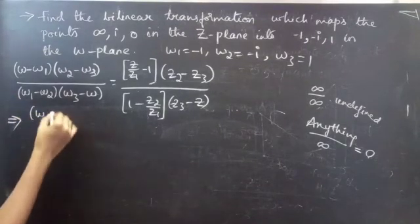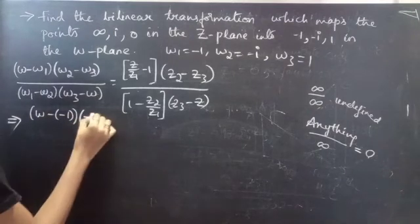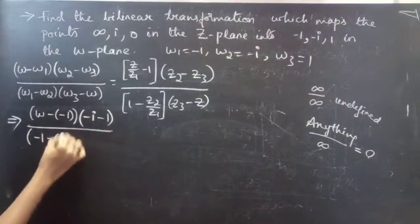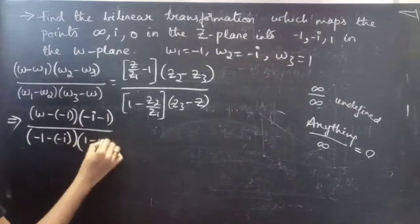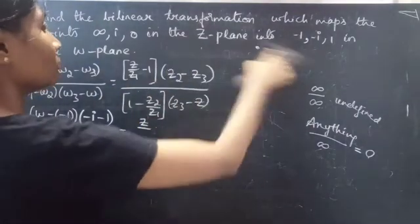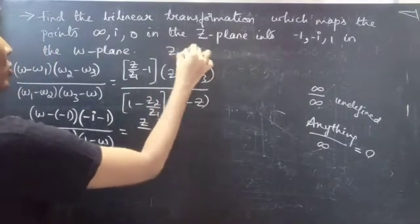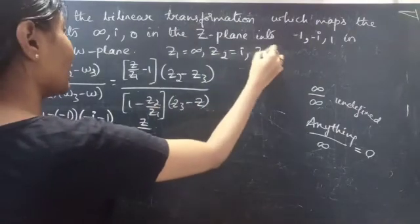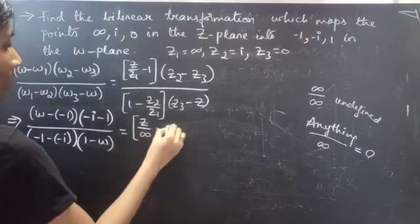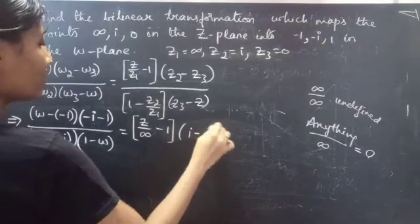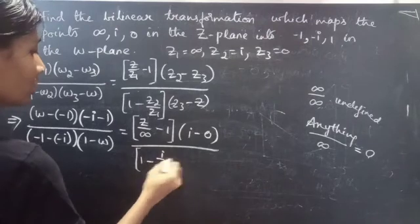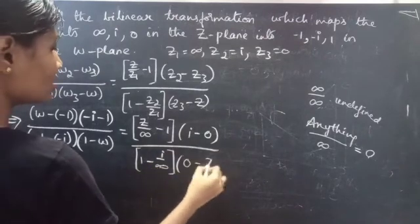Substituting: (ω − (−1))(−i − 1) / ((−1) − (−i))(1 − ω) equals to (z/∞ − 1)(i − 0) / (1 − i/∞)(0 − z). Since z1 = infinity, z2 = i, z3 = 0. Anything divided by infinity is 0, so z/infinity = 0 and i/infinity = 0.